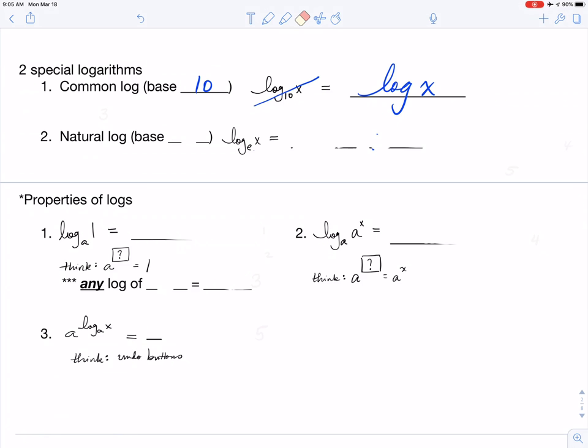Now the second type of logarithm is the natural logarithm. The natural logarithm is always going to have a base of e. Once again, what I'd like for you to see is that for right now I've written this as log base e of x, but we're never going to write it as log base e of x. What we're going to do is write this as the natural log, ln of x.